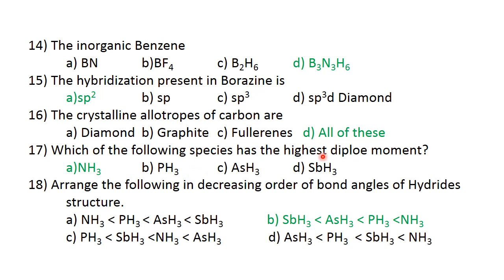Which of the following species has highest dipole moment? Ammonia has the highest dipole moment. A is the correct answer. Arrange the following in increasing order of bond angles of hydride structure. Answer B: SbH3 less than AsH3 less than PH3 less than NH3.